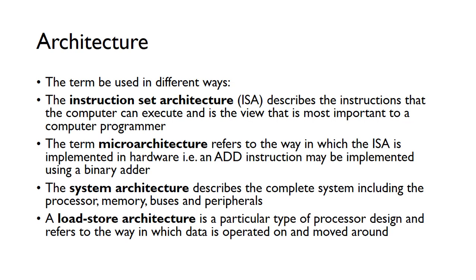We're going to come across the term architecture, and we can use it in different ways. The first way is in the instruction set architecture, or ISA. This describes the instructions that the computer can actually execute, and this is most important to a computer programmer — we need to know whether the computer can do addition, subtraction, exclusive or, whether it can load data, store data, and so on. The actual instructions the computer can execute are defined in the instruction set architecture.